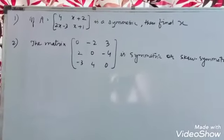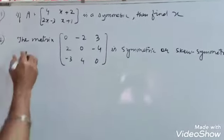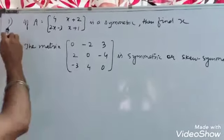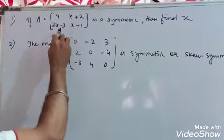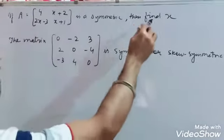Let's see two simple examples based on symmetric and skew-symmetric matrices. The first question is: if A is symmetric, then find x.